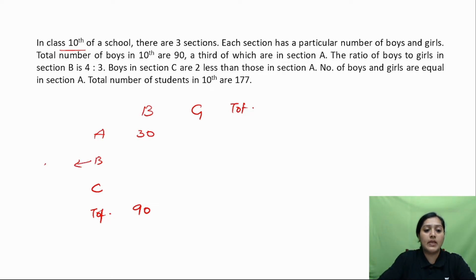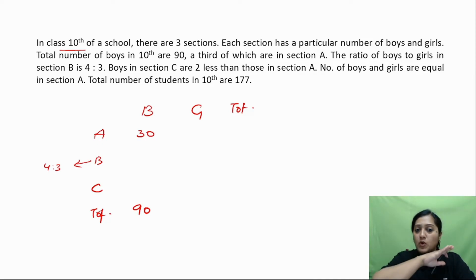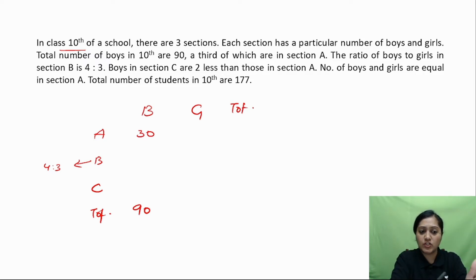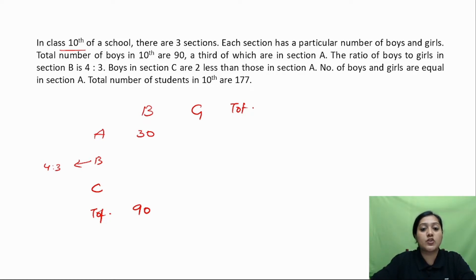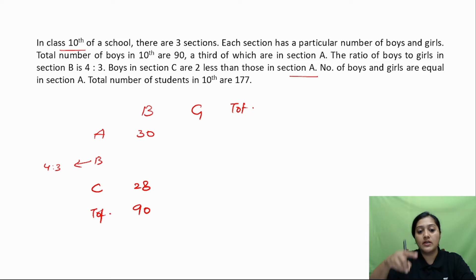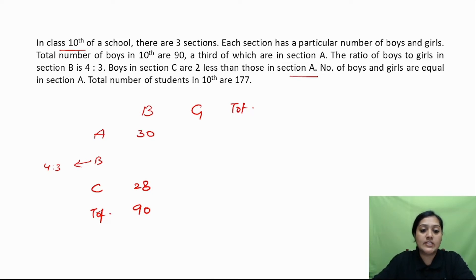The ratio of boys to girls in Section B is 4:3. Write all the data that is given — even if you can't solve it immediately, note it on the side. Boys in Section C are two less than those in Section A, so Section A has 30, meaning Section C has 28 boys. Now add boys in A and C, subtract from 90, and you get 32 boys in Section B.